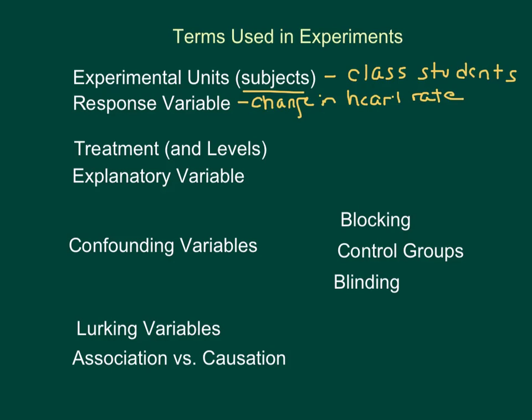We'll decide next week how to measure that change. Next are the treatments. And we might decide next week that we are going to give our subjects either soda or coffee. And we might decide on several levels. We might decide to give either one, two, or three cups of soda, for example, to different subjects. And the explanatory variable is what we are hoping explains the response. So in our case, we are trying to isolate the effect of caffeine.